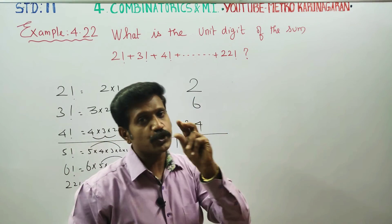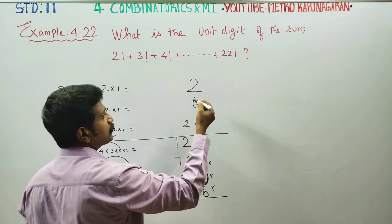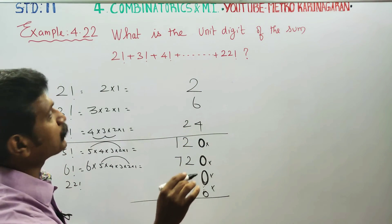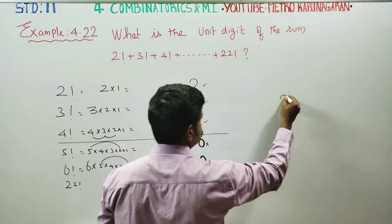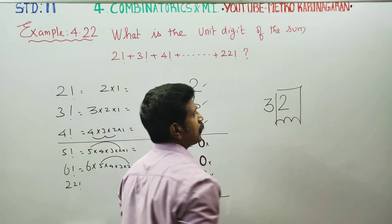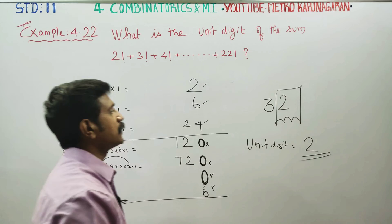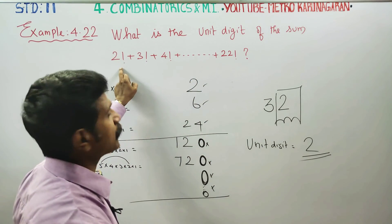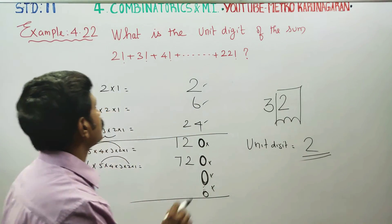For the unit digit of the total sum, adding the unit digit contributions is enough. If you add 1 factorial plus 2 factorial plus 3 factorial plus 4 factorial: that gives 1 plus 2 plus 6 plus 24, which is 33, so the unit digit is 2. Therefore your answer will be 2.